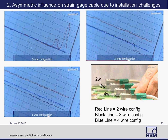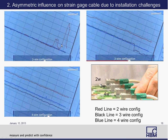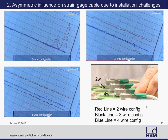The second issue is the asymmetric influence on strain due to bad cabling or installation challenges. We tested three different configurations—two wire, three wire, and four wire—all with DC excitation, and jiggled the cable to simulate real-world mechanical vibration or bad cabling. In two-wire mode, there is a lot of noise in the signal. In three-wire mode, also a lot of noise. Whereas in four-wire mode, it's a very good representation of the signal. So the four-wire configuration works out very nicely, and that's what we recommend for the best results when you have challenging installation conditions.